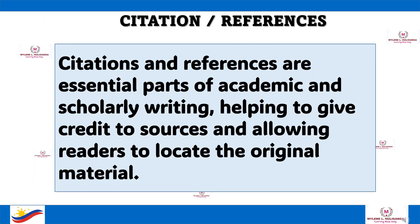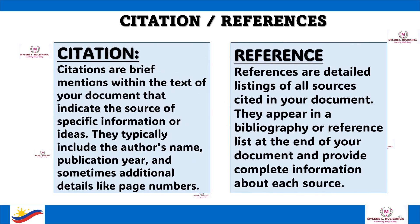Citations and references are essential parts of academic and scholarly writing, helping to give credit to sources and allowing readers to locate the original material. Citations are brief mentions within the text of your document that indicate the source of specific information or ideas. They typically include the author's name, publication year, and sometimes additional details like page numbers. References are detailed listings of all sources cited in your document, appearing in a bibliography or reference list at the end and providing complete information about each source.